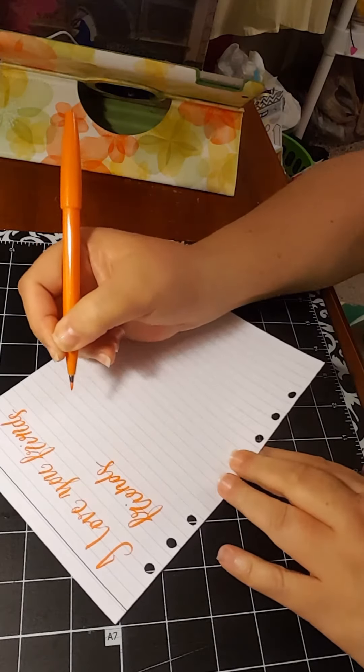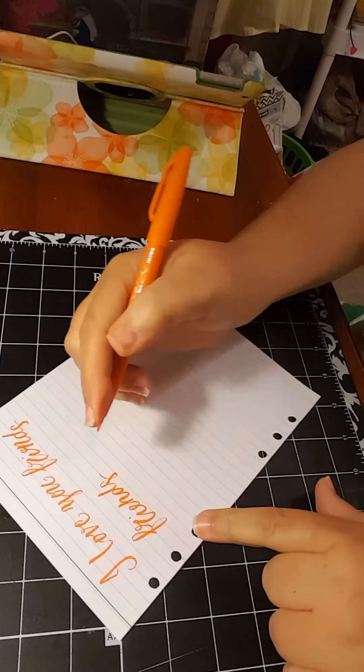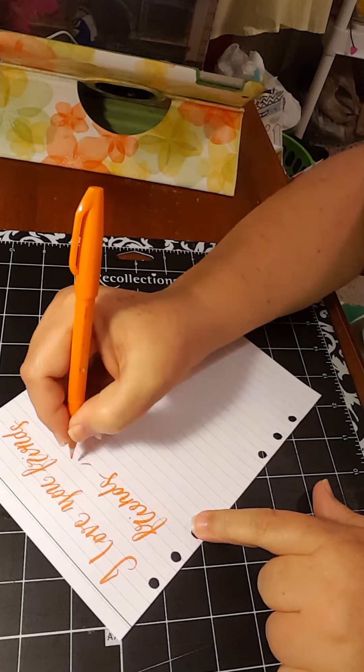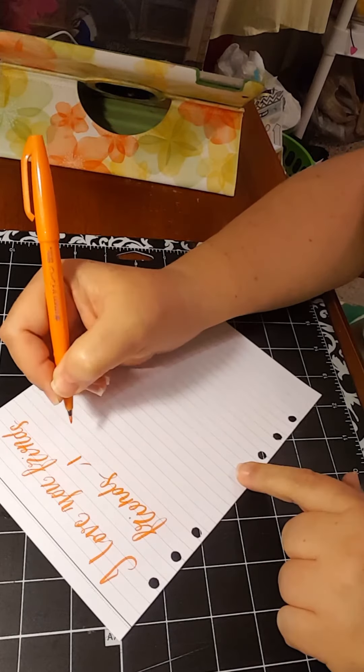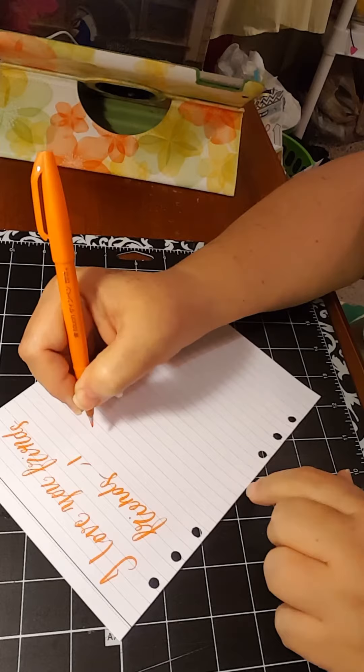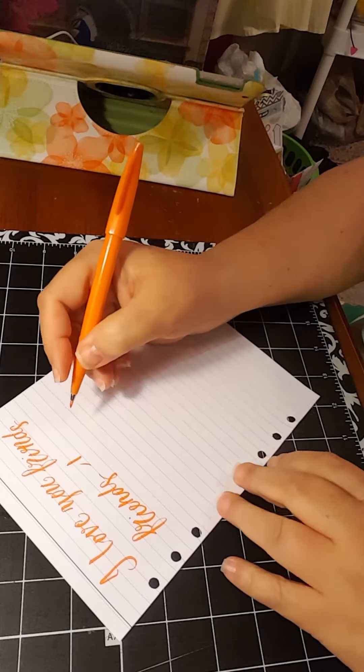The most important thing is that you notice when you do an upstroke it's thin, and when you do a downstroke it's thicker.